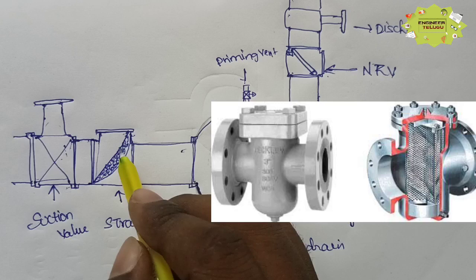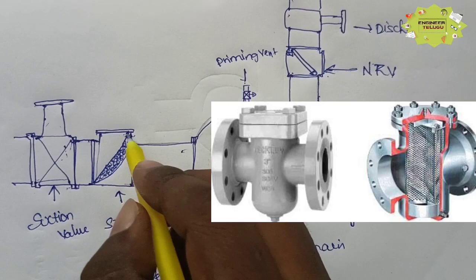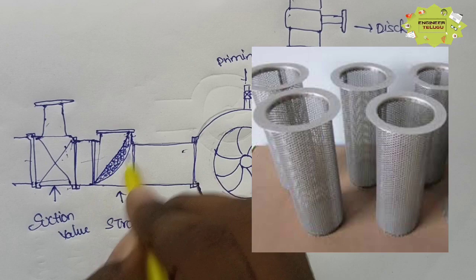This is the strainer. We can see related images in the industry. The strainer filters out impurities from the section so they do not enter the pump.